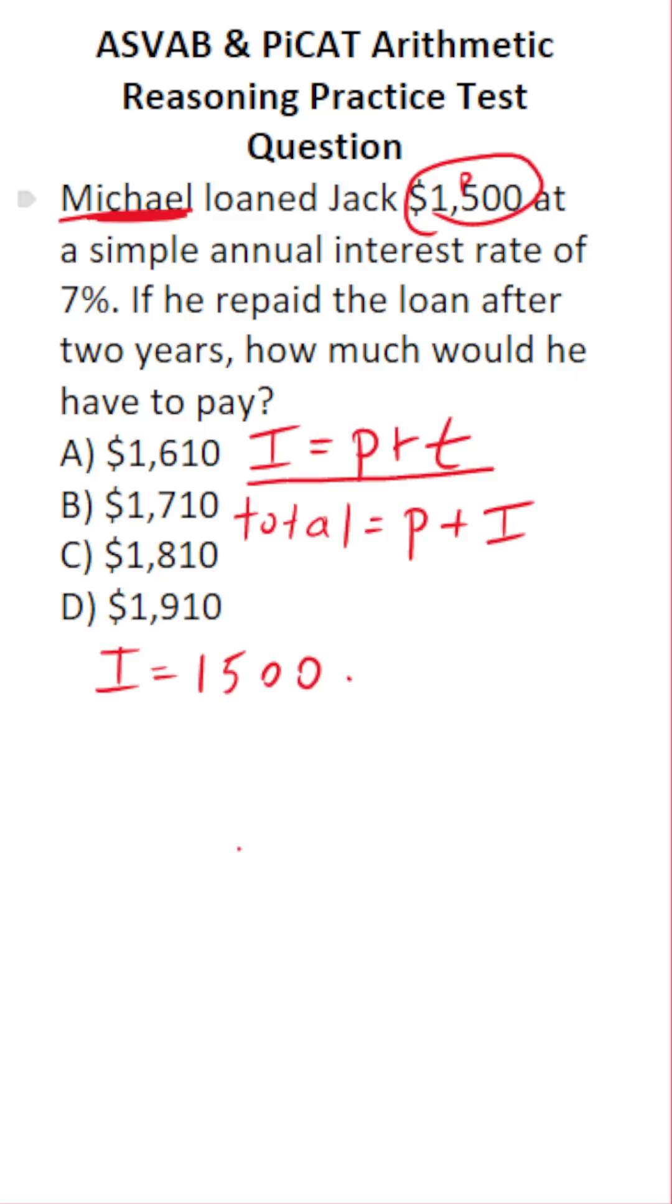$1,500 times rate. That's the interest rate. In this case, he had an interest rate of 7%, which in decimal form is 0.07 times time. How long did he take the loan out for? He took it out for two years, so this is multiplied by two.